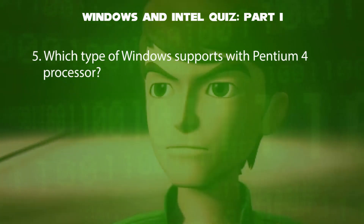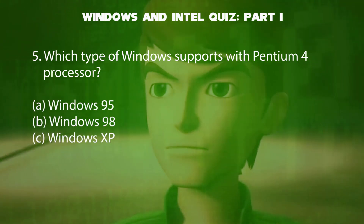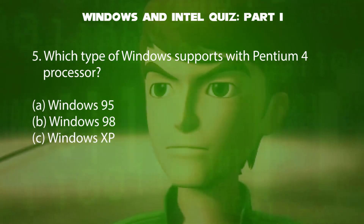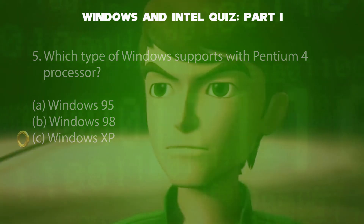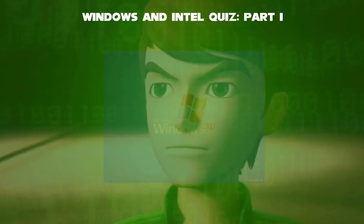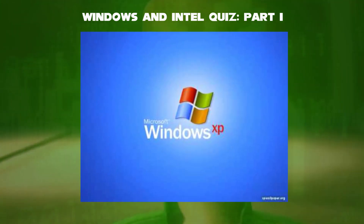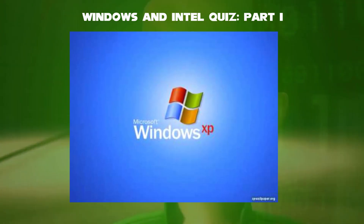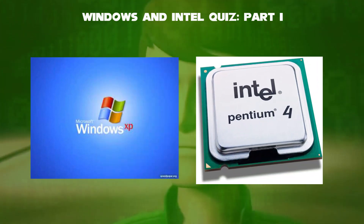Fifth question: which type of Windows supports the Pentium 4 processor? Is it Windows 95, Windows 98, or Windows XP? The answer is Windows XP, a major release of Microsoft's Windows NT operating system in 2001, which is supported with the Pentium 4 processor.